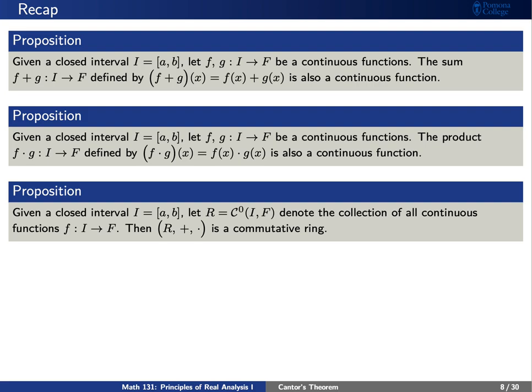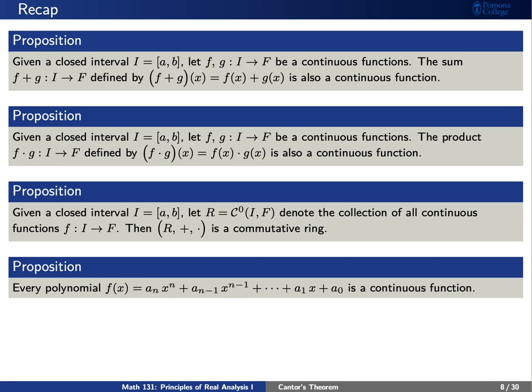Third, let's consider the collection of all continuous functions from I to ℝ. We'll denote this by the symbol C⁰(I, ℝ). Then this collection is a commutative ring. Next, any polynomial is a continuous function. If you recall, we proved this using induction on the degree n.